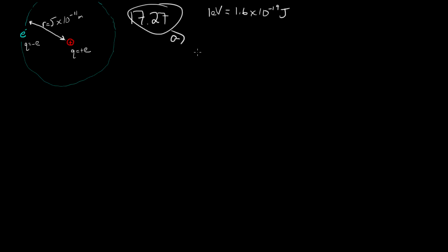Part A asks us, what is the electric potential at the electron's orbit due to the proton? So if you remember, you have a positive charge, you will create a potential that goes like 1 over the distance that you are away from the charge.